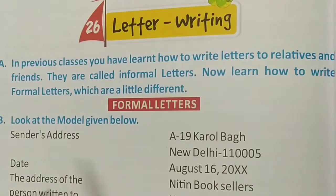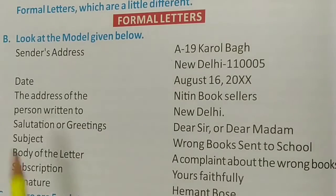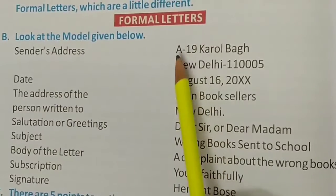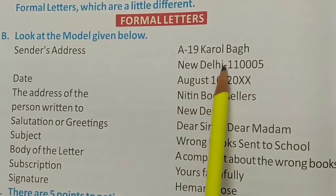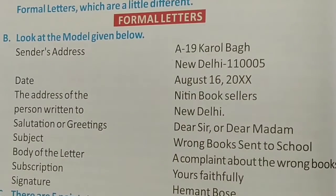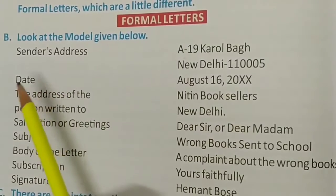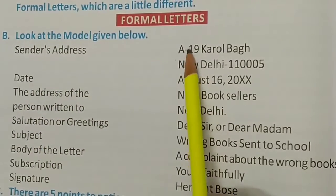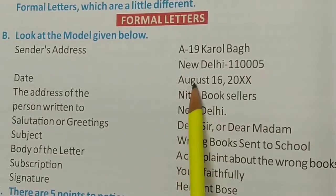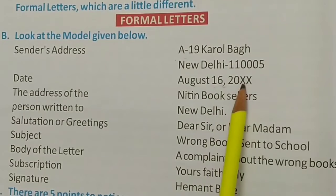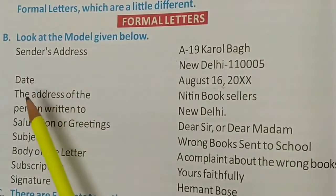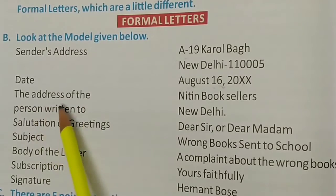Today we will revise formal letters — opcharik patr — and how they are written. First, you write the sender's address — bhejne wale ka pata — like A-19, Karol Bagh, New Delhi 110005. After the sender's address, the next element is the date. You write the month name, then the date, put a comma, then the year in which you are writing the letter.